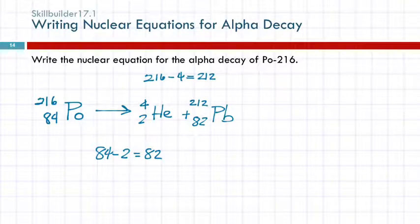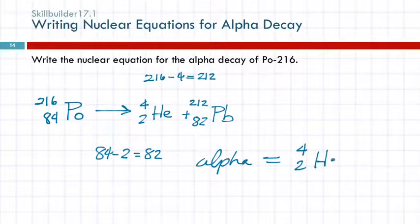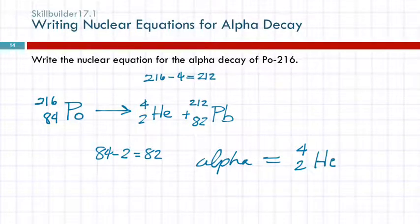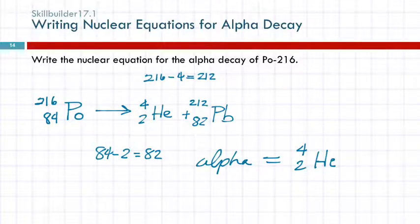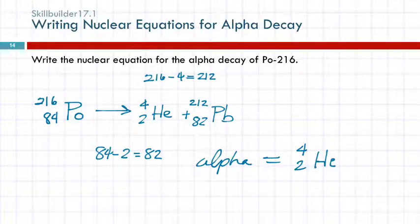The alpha particle always has that same symbol — mass number 4, atomic number 2. In general, the radioactive elements tend to be the larger ones. If you see an element on the periodic table with its atomic mass in parentheses, starting around atomic number 84, those are all radioactive.